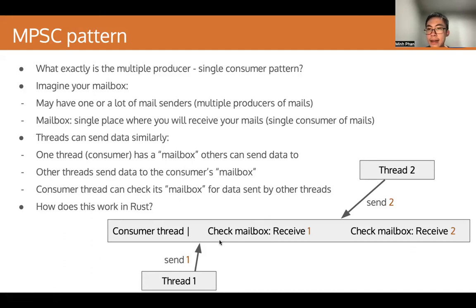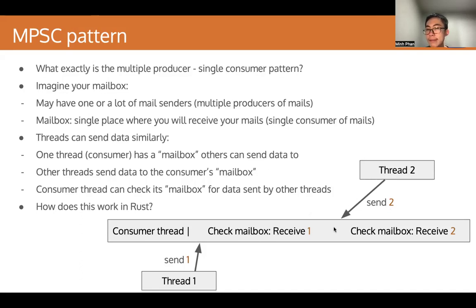Here is a graphical example of how that works. We have a consumer thread, and thread one and thread two. Thread one, at some point, sends message one. After some time the consumer thread checks the mailbox and receives message one. At some point thread two sends message two, and afterwards the consumer thread checks the mailbox and receives message two.